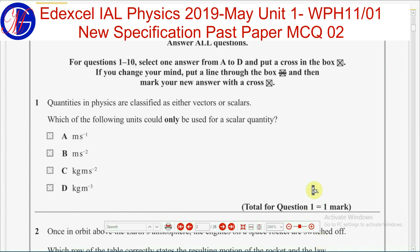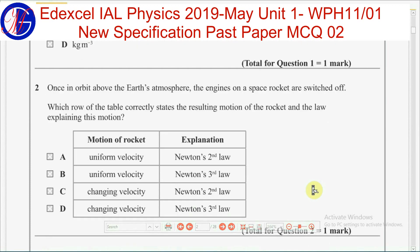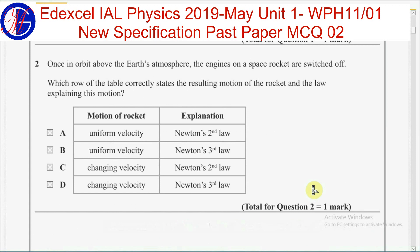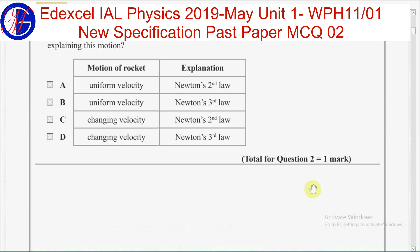Second Question. Once in orbit above the Earth's atmosphere, the engines on a space rocket are switched off. Which row of the table correctly states the resulting motion of the rocket and the law explaining this motion?